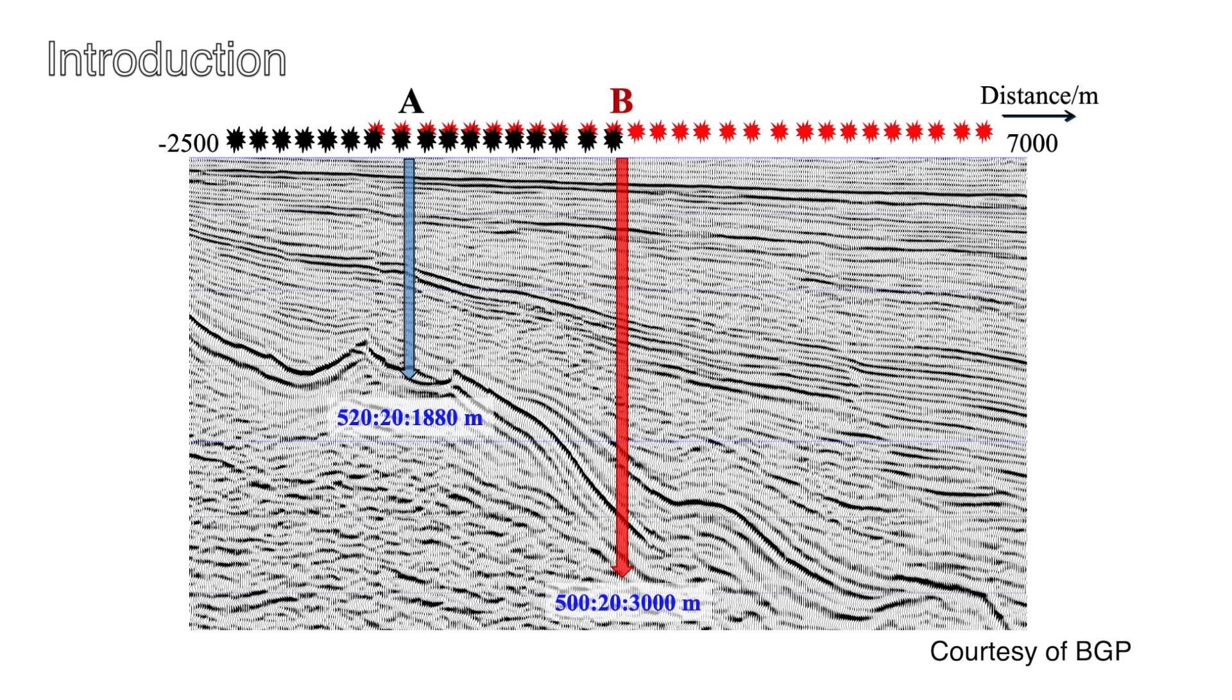In this video, we present the survey carried out at well B to show the dipping features. At well B, there are a total of 267 shot locations, with an interval of 25 meters on average. The geophones recorded 6 seconds data at a total of 126 levels from 500 to 3000 meters.